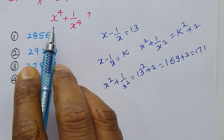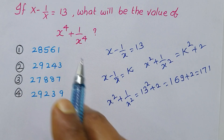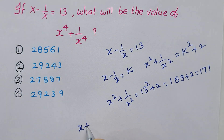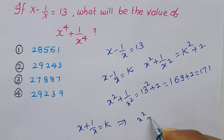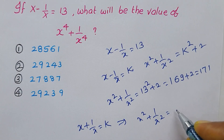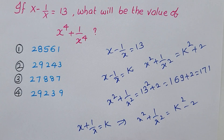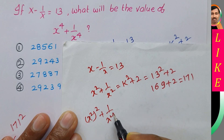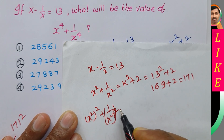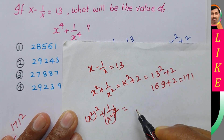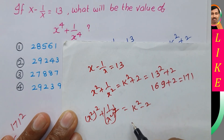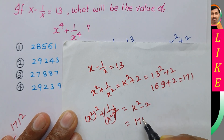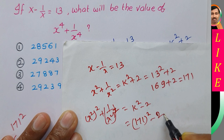Now we find x power 4 plus 1 by x power 4. Using the formula: if x squared plus 1 by x squared equals k, then x power 4 plus 1 by x power 4 equals k squared minus 2. So that is 171 squared minus 2.